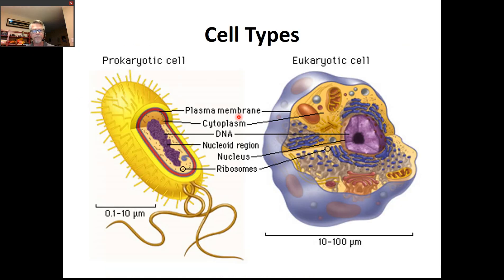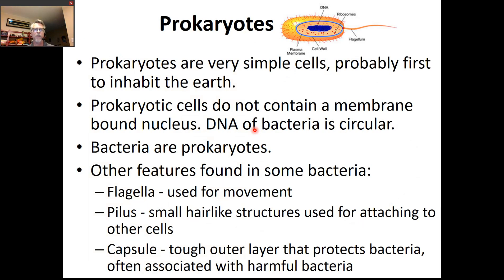We can divide cells into two basic types: prokaryotic and eukaryotic. Prokaryotic cells are very simple cells — they were the first organisms to inhabit the planet. Things like bacteria are prokaryotes. They don't contain a nucleus like our cells do. The DNA found inside a prokaryote is circular and is not contained in a membrane-bound nucleus. So prokaryotes do not contain membrane-bound nuclei and their DNA is circular.